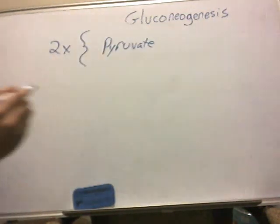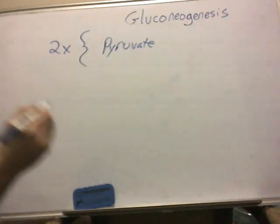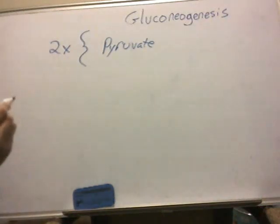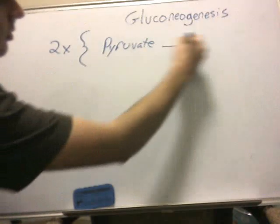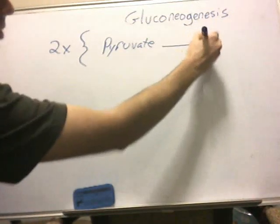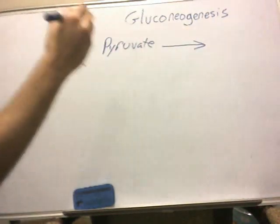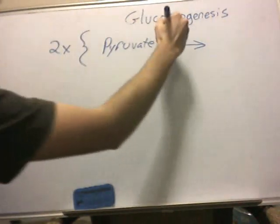It's important to note that pyruvate can also be used as a precursor for some amino acids, as well as the next product that we get when we add pyruvate carboxylase.